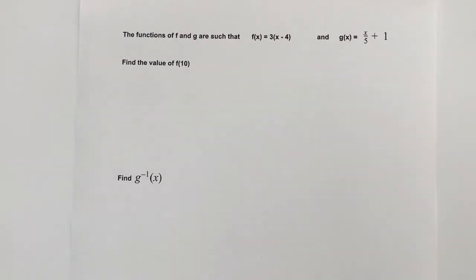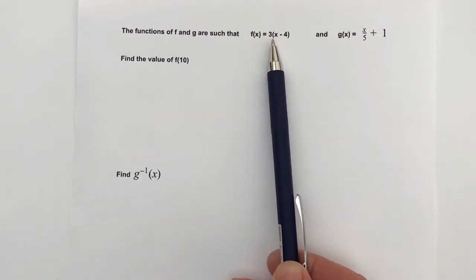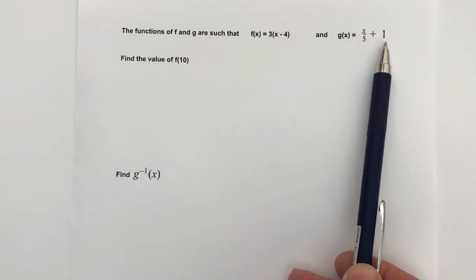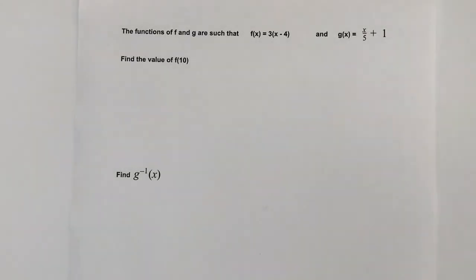Hi, this is just a very short video I'm going to add on to the playlist on inverse functions. The question says that the functions f and g are such that f(x) = 3(x - 4) and g(x) = x/5 + 1.